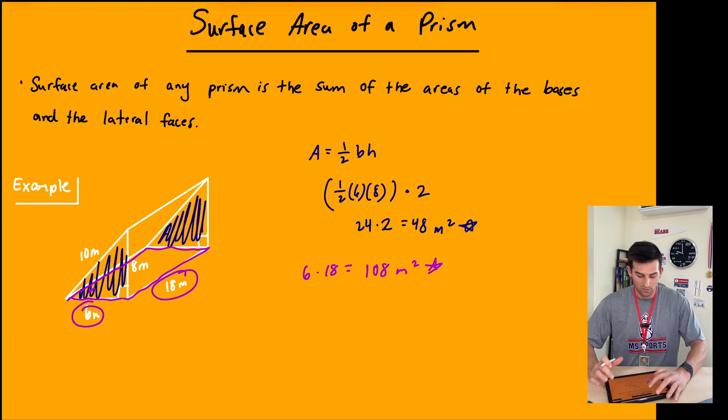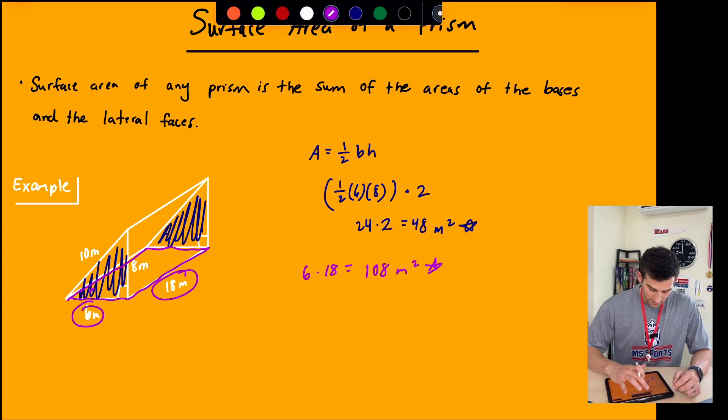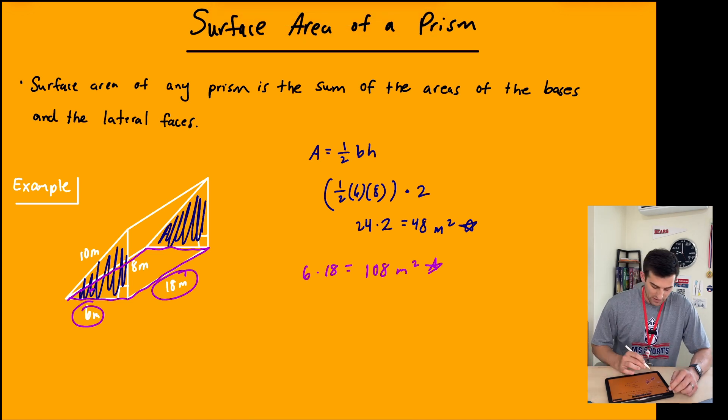Once we're done we can add up all of our star measurements to get our surface area. Now let's go to the left side—it'd be like here, and then here, and then here, and then here.